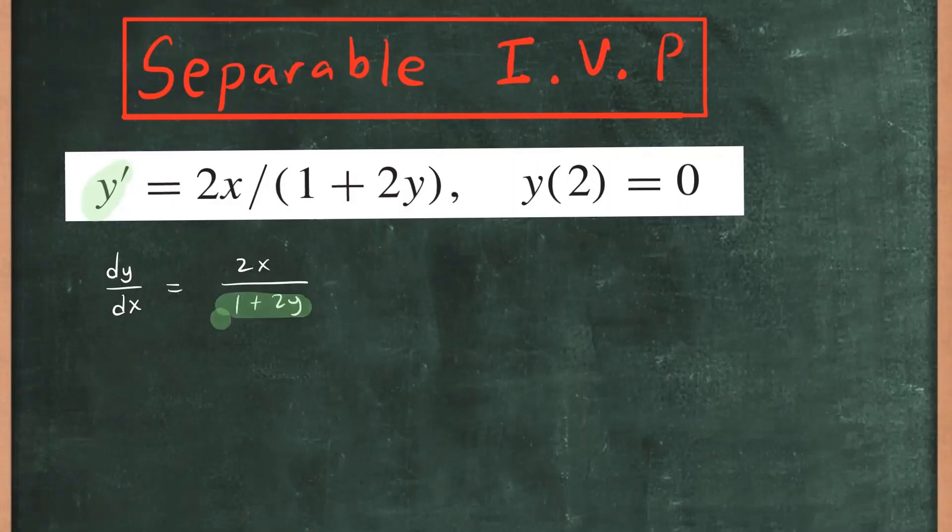And then I can also multiply both sides by dx, so everything involving x will be on the right side of this equation. So here's how it's going to look like. You'll have (1 + 2y) dy is equal to 2x dx. So that's what we mean by separable.